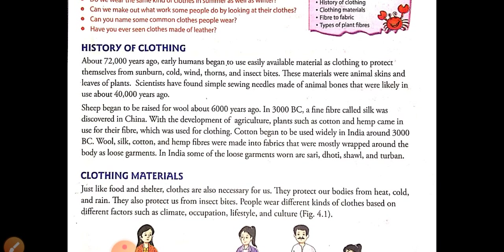Everything has its history, so how were clothes made and how did they come into existence? About 72,000 years ago, early men began to use the skin of animals and leaves to protect themselves from hot air, sunburn, cold wind, thorns, and insect bites.